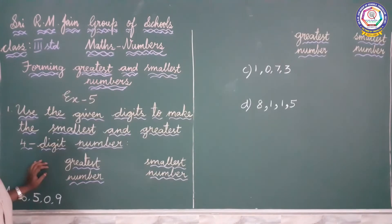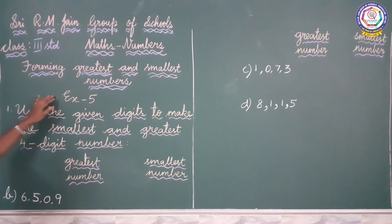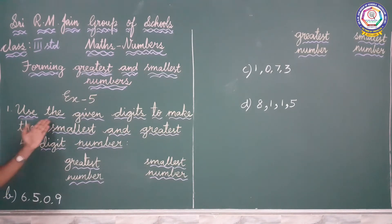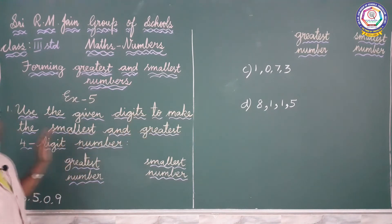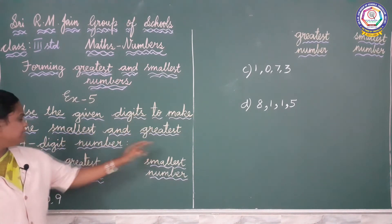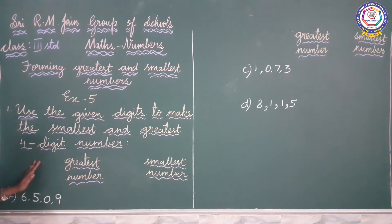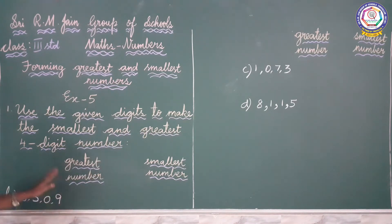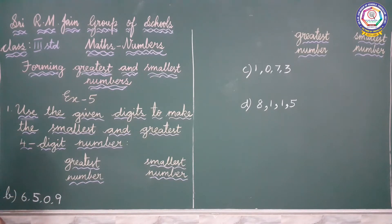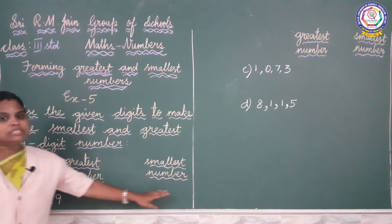So in exercise 5 we are going to see forming greatest and the smallest number. Use the given digits to make the smallest and greatest 4-digit number. They have given 6, 5, 0, 9 — how many numbers? 4 numbers. See how will you find out the greatest number and the smallest number.